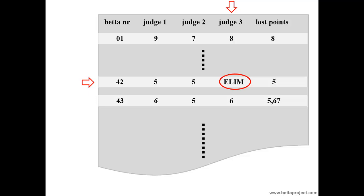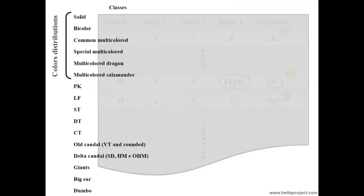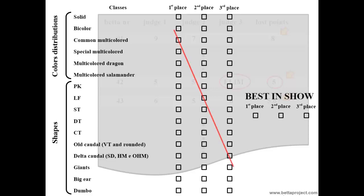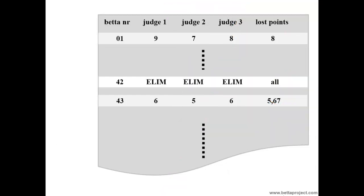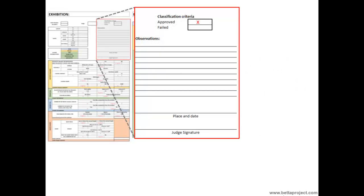However, if the condition of partially evaluated was maintained until the final report, then the word 'elim,' meaning eliminated, will appear in the cell of the corresponding row of this betta with the column of the respective judge — or in multiple cells in the case of more than one judge. Because of that, even if that betta lost fewer points than another which had all evaluations, it will not be able to compete for any prizes in any category, even first, second, or third place, and much less for the best-in-show.